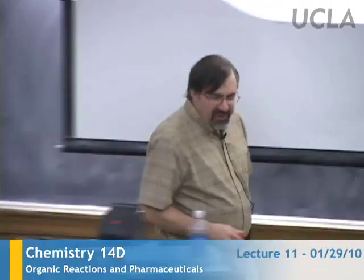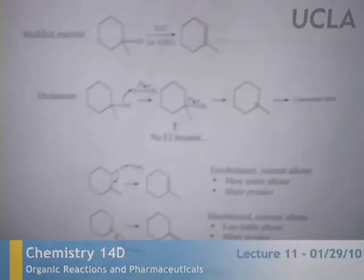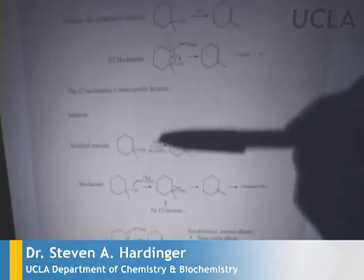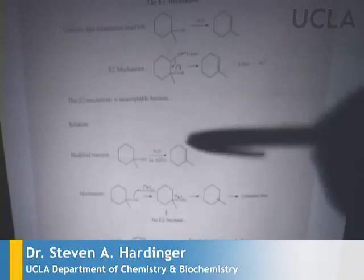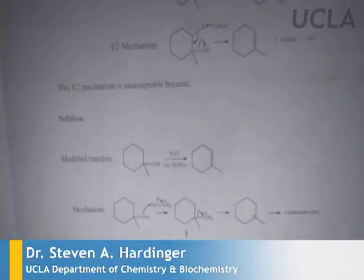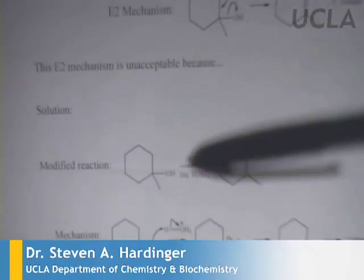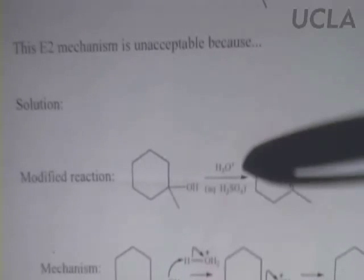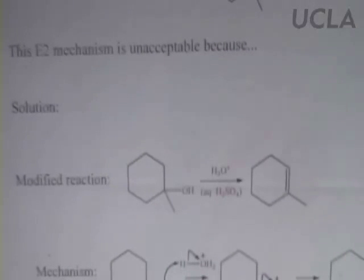Today we're going to finish talking about elimination reactions, so let's get back into finishing our E1 mechanism. This is the carbocation version of the elimination reaction. And to do it in the case of an alcohol, which is one of the most frequent places where we see it, we need to convert the OH to a better leaving group, so that's what putting the acid does.